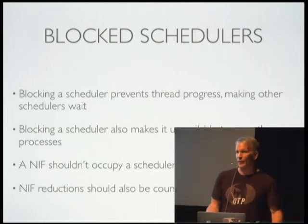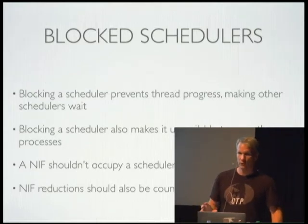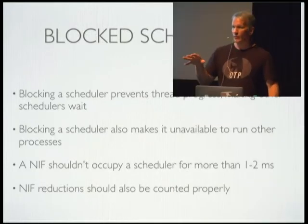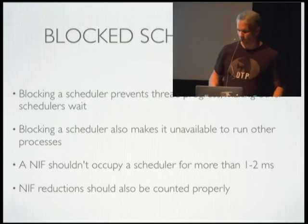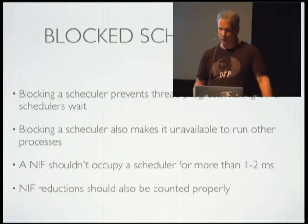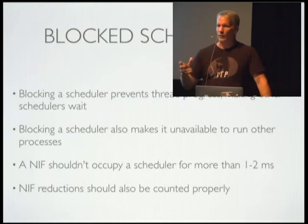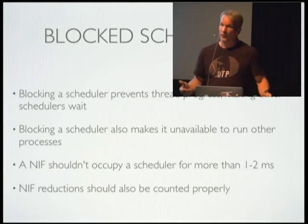When you do that, you block the scheduler from making thread progress, which means other schedulers are also held up waiting for that thread. The general rule is a NIF should not run for more than one to two milliseconds. Different parts of the Erlang documentation say one millisecond; another part says 100 milliseconds. I would stay on the lower side — don't trust the 100-millisecond figure. Stay around one to two milliseconds. Also, when running a NIF, you should be counting reductions, because that six-second NIF is only counted as one reduction, when it should really be around 12,000 reductions.